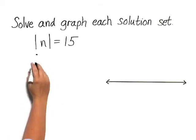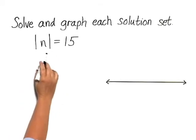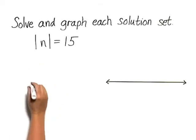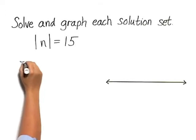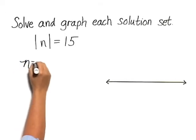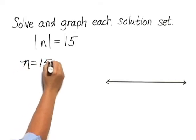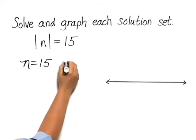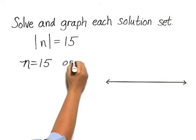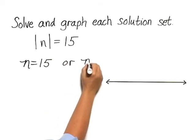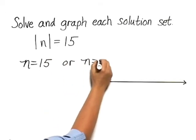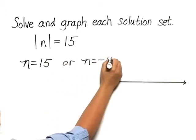If the absolute value of n equals 15, then n must equal 15, or n must equal negative 15.